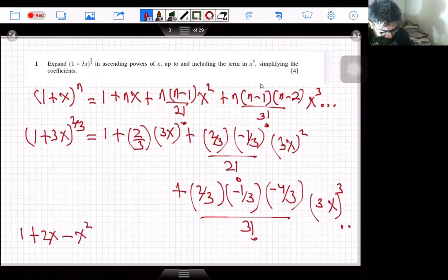And then 2/3 times -1/3 times -4/3 divided by 3 factorial and then multiply by 3³, so this is 4/3 x³.